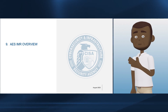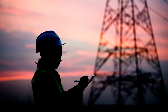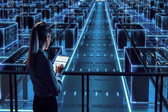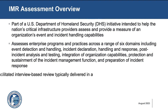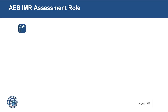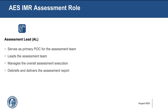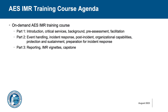Finally, let's review the AES IMR training course. The IMR Assessment is part of a U.S. Department of Homeland Security initiative to help the nation's critical infrastructure providers assess and provide a measure of an organization's event and incident handling capabilities. It assesses enterprise programs and practices across a range of six domains. The Assessment Lead role supports the IMR. Although all AL goals are the same, the individual activities change according to the assessment type. The AES IMR is an on-demand course. Here's the agenda. Part 1: Introduction, Critical Services, Background, Pre-Assessment, Facilitation. Part 2: Event Handling, Incident Response, Post-Incident, Organizational Capabilities, Protection and Sustainment, Preparation for Incident Response. Part 3: Reporting, IMR Vignettes, Capstone.